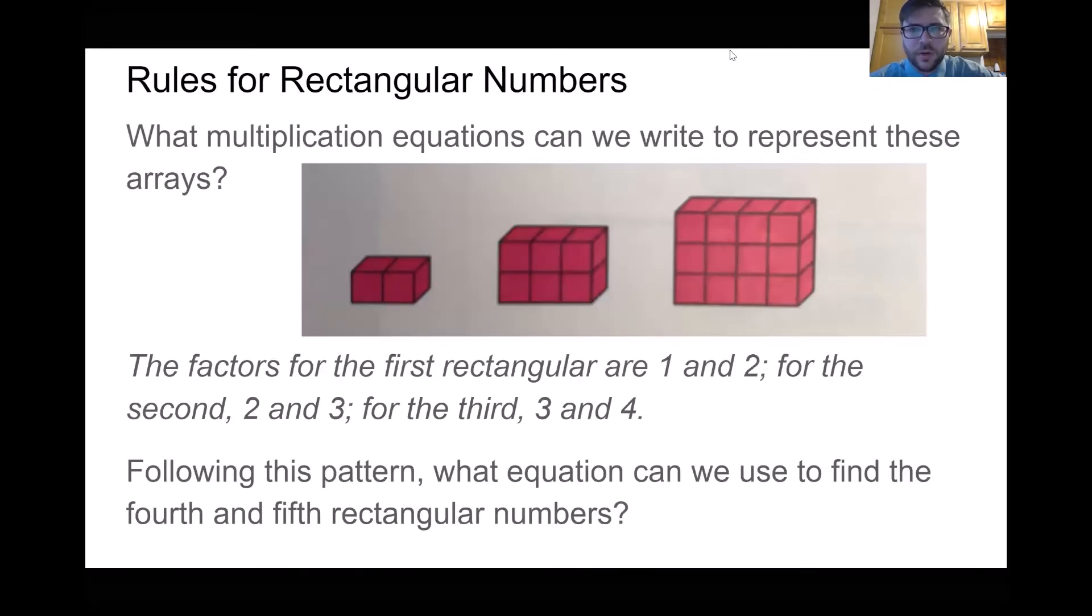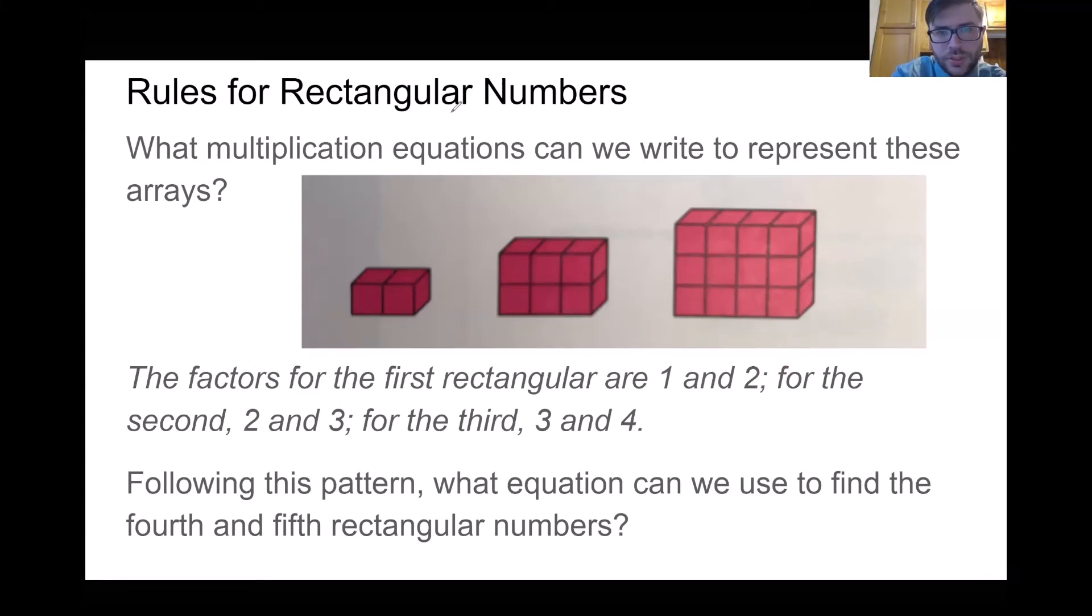Let's see if we can think of any for rectangular numbers. So what multiplication equations can we write to represent these arrays? Think about it for a second. Think about what we need to do to write equations for these arrays. And if you remember array, we're going to count the rows and then the columns. So I see one row and then there's two on top. So we could do one times two, which would get us two. Same thing here. We have two, we have three. Two times three equals six. Three, four. Three times four equals 12.